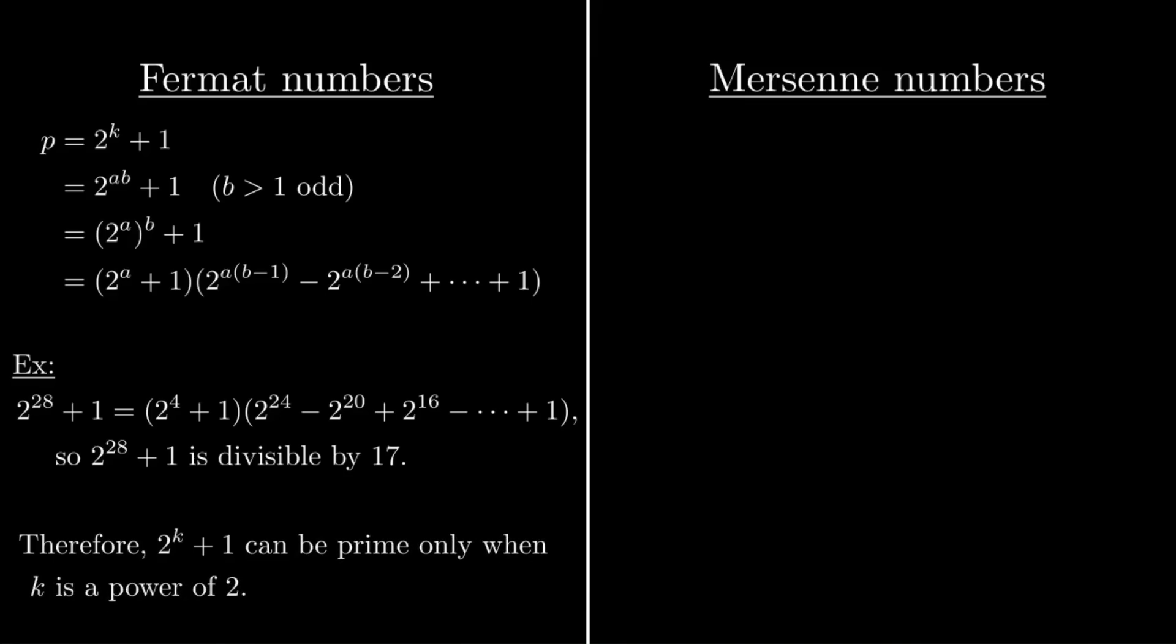Mersenne numbers are similar, except it's a power of 2 minus 1. So if we want that to be prime, we can do a similar trick with a difference of powers. So if k is not a prime, we can write k as a product of two smaller numbers, and then factor that as a difference of powers. And since our factors a and b are both larger than 1, we get a factorization where one factor is 2^a - 1, and the other is some big number that's larger than 1.